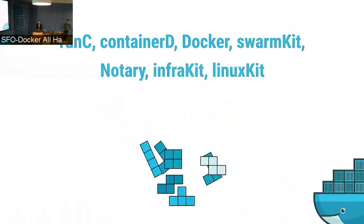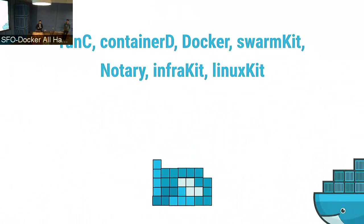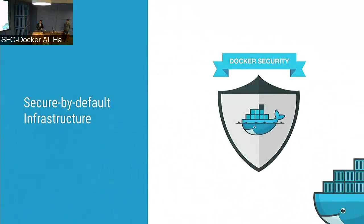Finally, when we bring together RunC, ContainerD, Docker, SwarmKit, Notary, InfraKit, and LinuxKit — all our components — we get a secure-by-default infrastructure. LinuxKit provides a hardened base OS, InfraKit provides a secure boot using Notary, and on top of that we build using Docker and SwarmKit with security features like SELinux, AppArmor, capability drops, secrets in SwarmKit, and mutual TLS by default. Moby brings all of these together into a secure-by-default infrastructure.